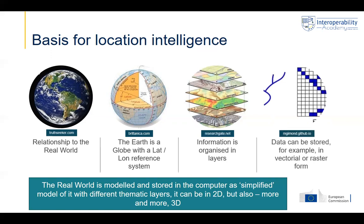You can represent and store location data in different ways. Two examples are vector data, where you have linear elements, or raster formats, which are more like a picture. You build with this relationship with the real world intelligence into your system.